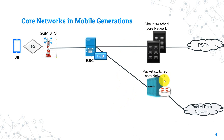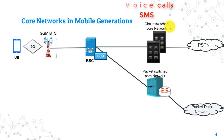CS Network stands for circuit switching network. It is designed mainly for voice services like voice calls, SMS, and many other features. Data sessions are not supported in CS Networks due to the very low bit rate in it.